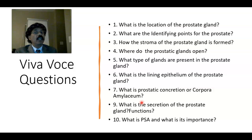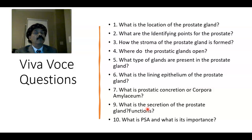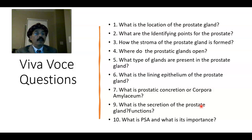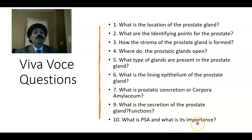The corpora amylacea is formed by the concretion of glycoprotein and keratin sulfate. What are the secretions of the prostatic gland and their functions? The gland secretes acid phosphatase, prostaglandin, fibrinolysin, prostatic specific antigen, and citric acid. Their function is to liquefy the semen — specifically the spermatozoa content — and also to add bulk to the semen. What is PSA and its importance? PSA is elevated in cases of prostatitis, benign hyperplasia of the prostate, and prostatic cancer.